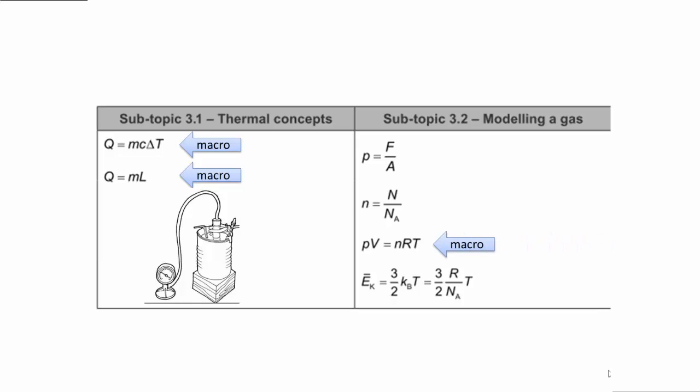And so these are macroscopic properties that we can measure. So these write that PV is equal to NRT. This is also a way of looking at macroscopic properties such as pressure, volume and temperature.